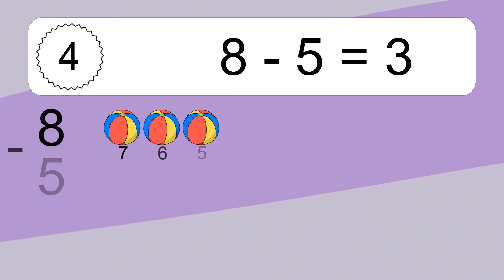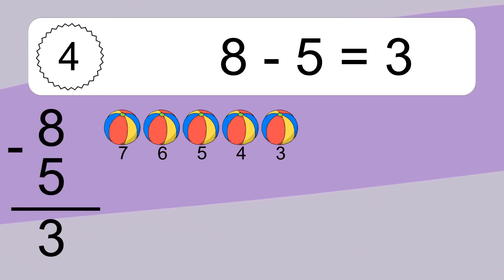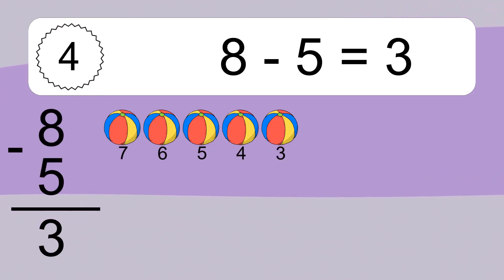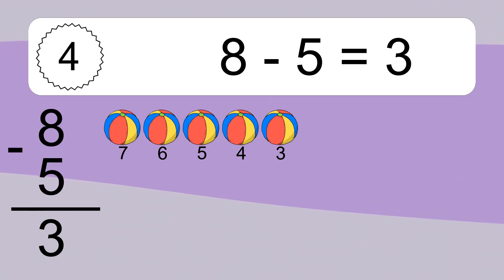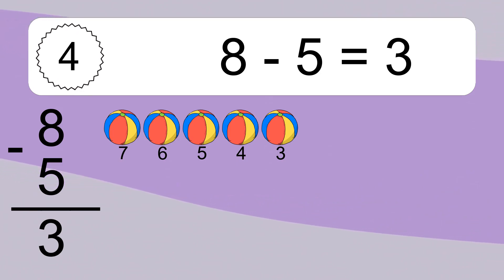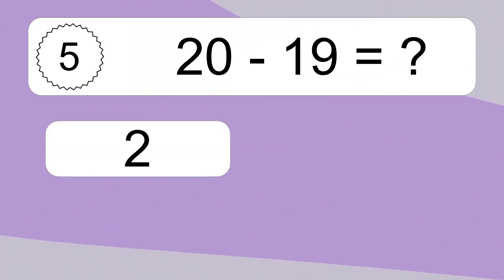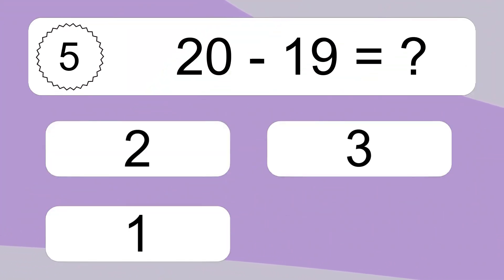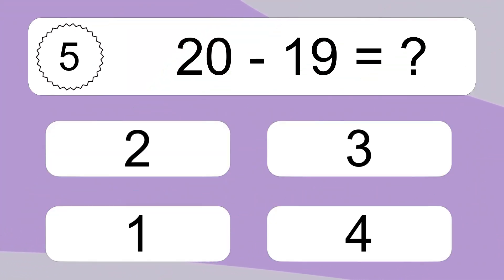8 minus 5 equals what? 8 minus 5 equals 3. Let's count it: 7, 6, 5, 4, 3.